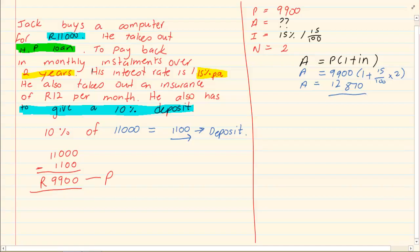Giving us a value of 12,870 Rand. Now did we answer the question? They say calculate his monthly payment.